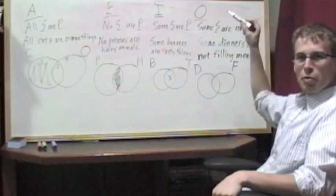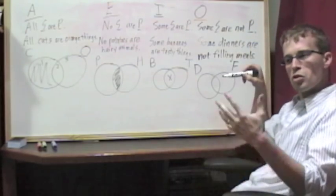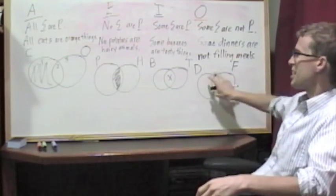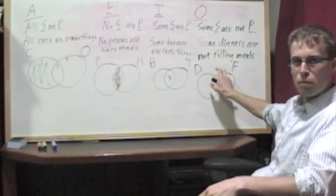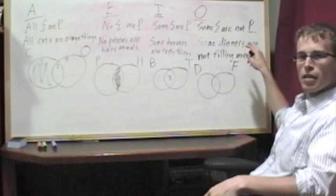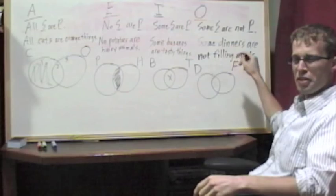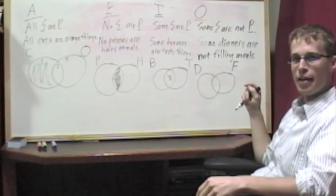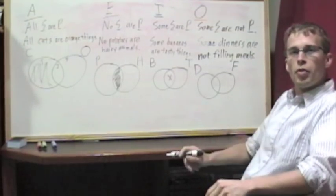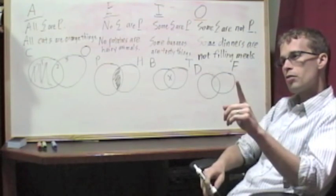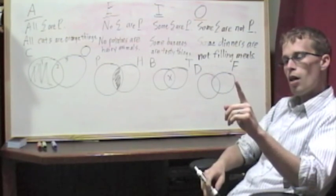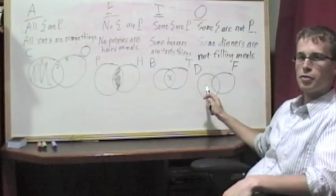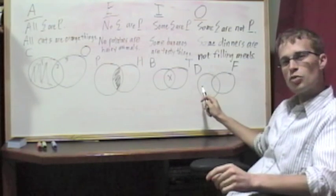We're claiming something about dinners. So we want to start off in the D circle. Start off with where your subject is. Always start off with that. We're saying that at least one member of the dinner category is not also a member of the filling meal category. The only place for something to be a dinner but outside of the filling meal circle is right here in the first spot on the left.